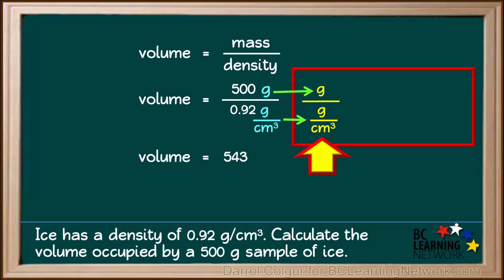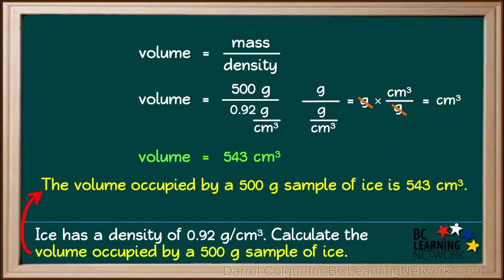We can summarize the process for getting the correct unit here. Grams divided by grams per cubic centimeter equals grams times cubic centimeters over grams equals cubic centimeters. So the final unit for our answer is cubic centimeters. This is a very common unit for volume. And the final answer to this question is the volume occupied by a 500 gram sample of ice is 543 cubic centimeters.